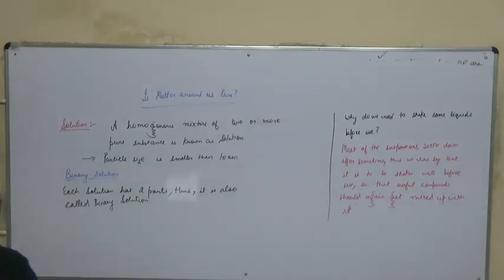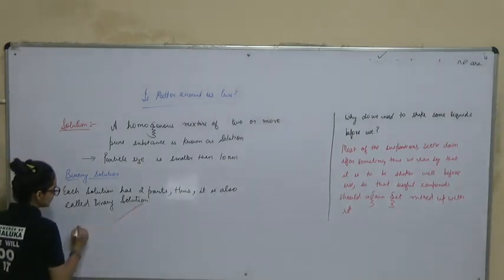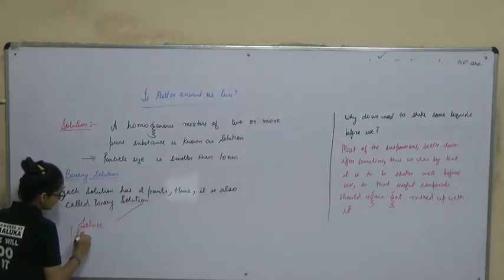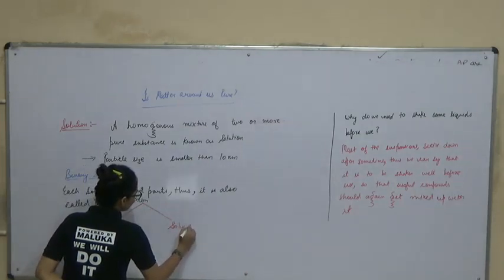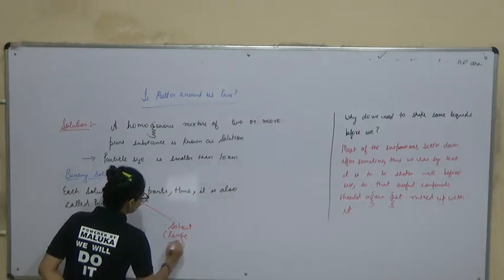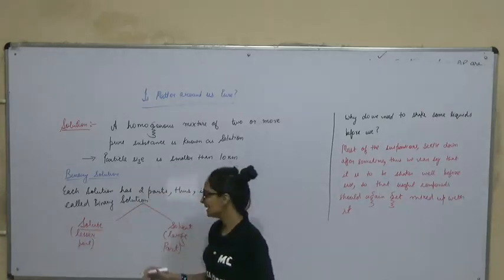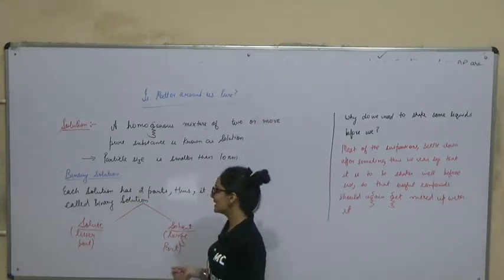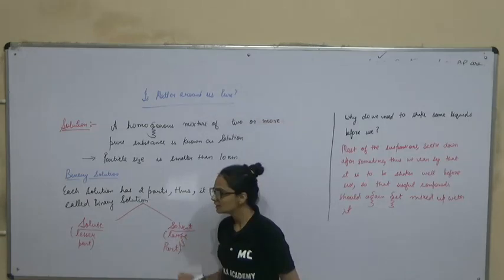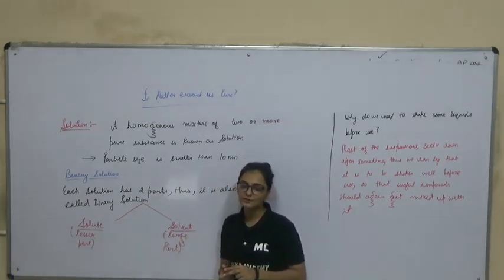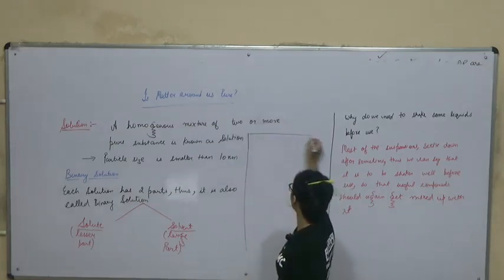What are the two parts of the solution? The first part is the solute — the solute is the lesser part. The next part is the solvent — the solvent is the larger part. In any solution, the solute is in less quantity and the solvent is in more quantity. We will cover the real definitions of solute and solvent after understanding this point.